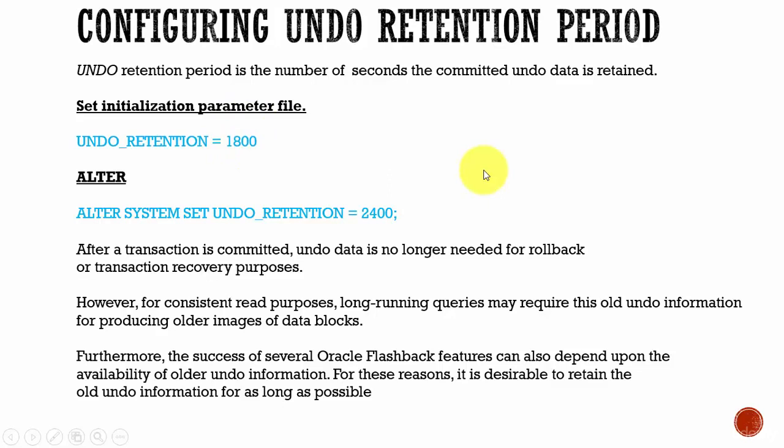The undo retention parameter acts a little differently in auto-extending undo tablespaces versus fixed-size undo tablespaces. In an auto-extending undo tablespace, Oracle retains the undo for at least the time specified in the undo retention period, and it also periodically uses this value to meet undo requirements. Oracle constantly checks for long-running queries, and if the undo retention period does not support a long-running SQL statement, it will increase the undo retention period.